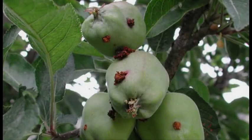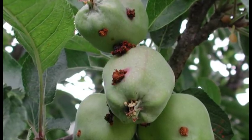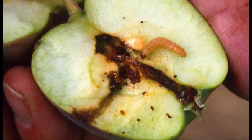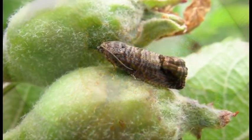Codling moths and oblique-banded leaf rollers cost tree fruit growers millions of dollars each year. Because larvae cause the actual damage, not much effort has been put into studying the behavior of adult moths.